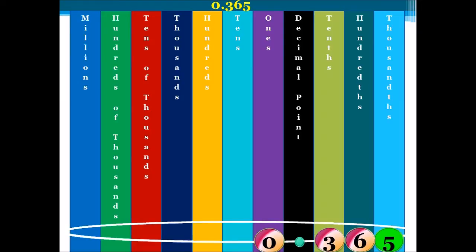So, therefore, we must add 1 to our 6. When we add 1 to our 6, we get 7. We now drop our 5. Do you see that dropping the 5 does not change the place value of the numbers ahead of it? So, therefore, our new number is simply 0.37.